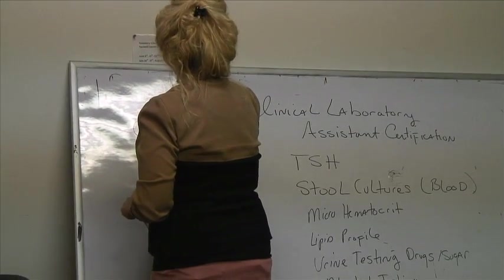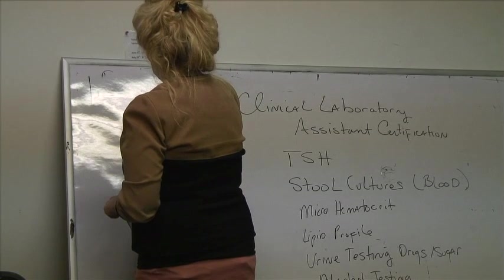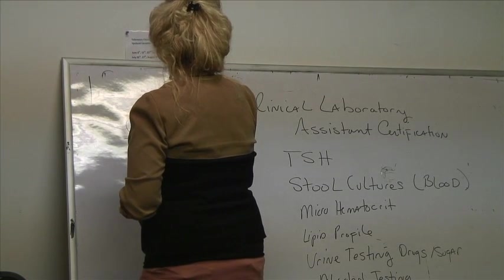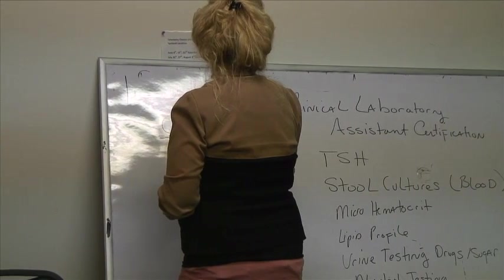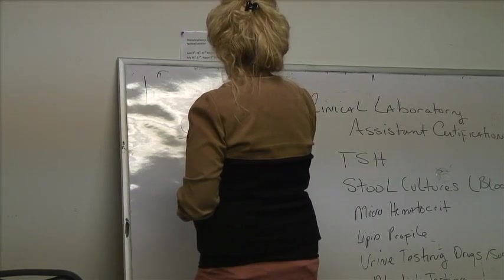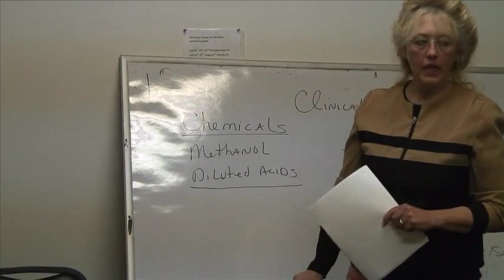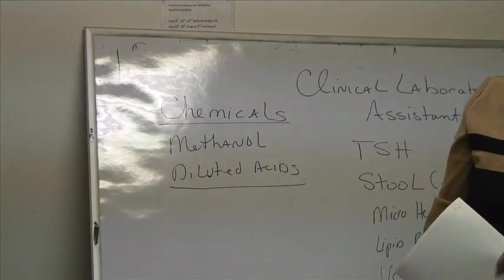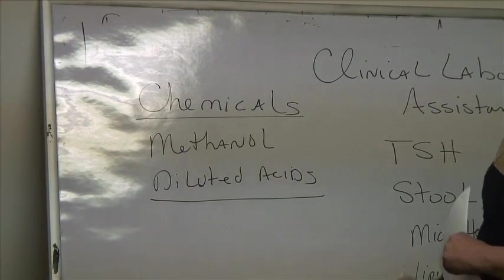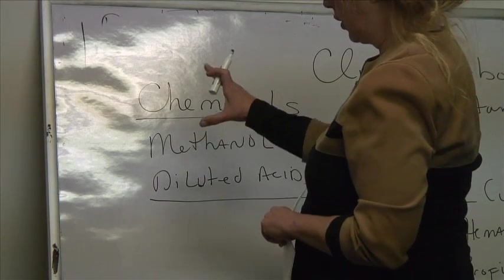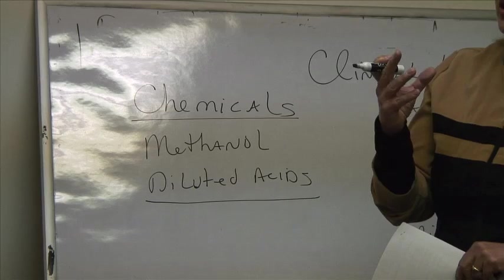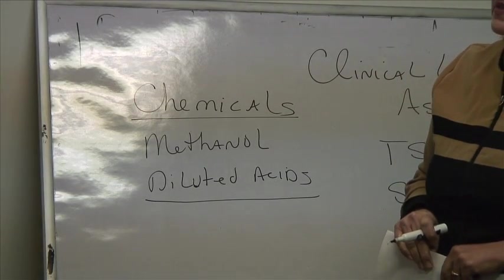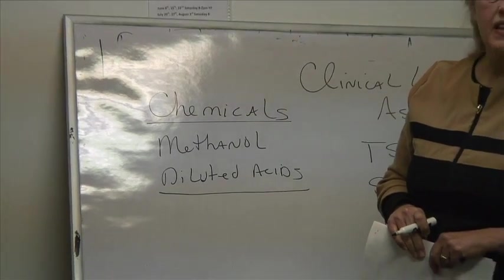Some chemicals you'll find in a laboratory include methanol and diluted acids — phosphoric, hydrochloric, and sulfuric. When I say diluted, they're not that diluted; they can still burn a hole through your skin. Most of these bottles are stored in a cool, dark area in smoke-colored amber-type heavy glass bottles. Nothing is stored in plastic.